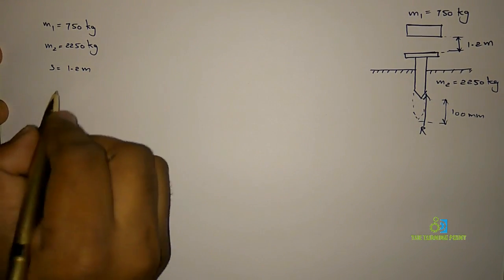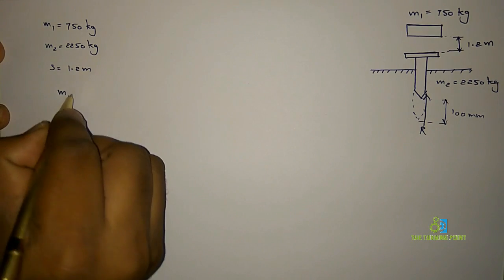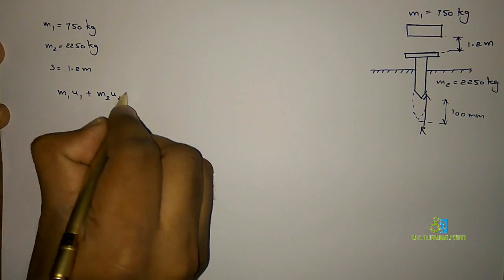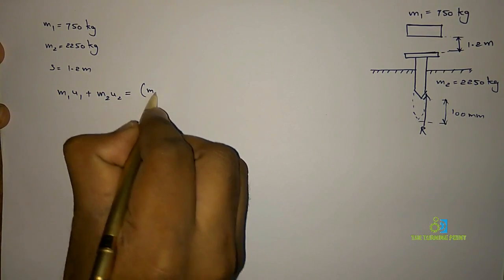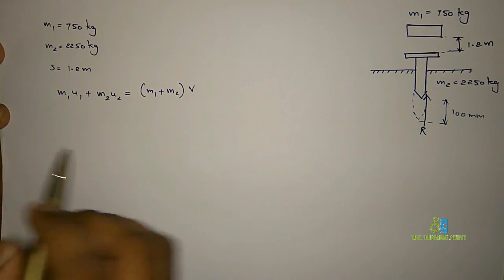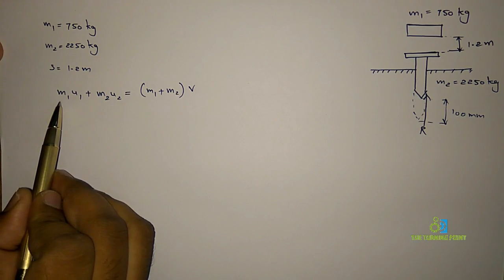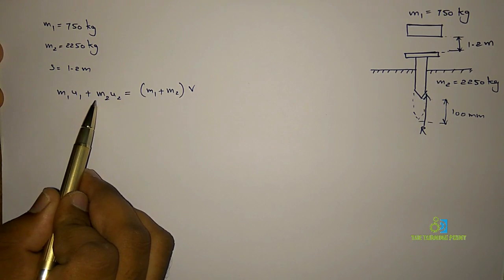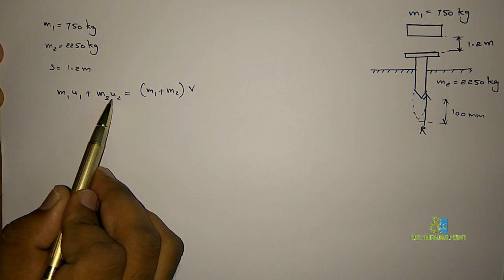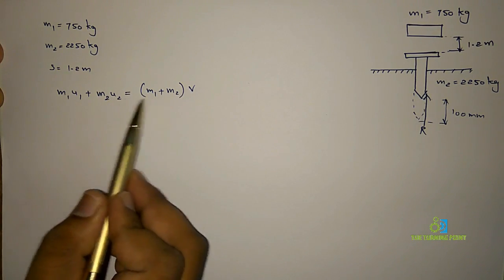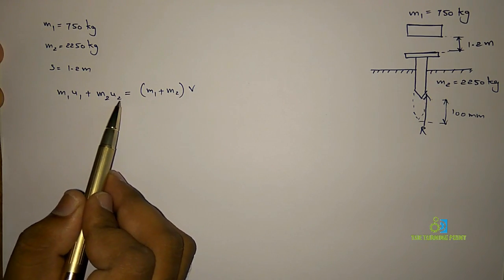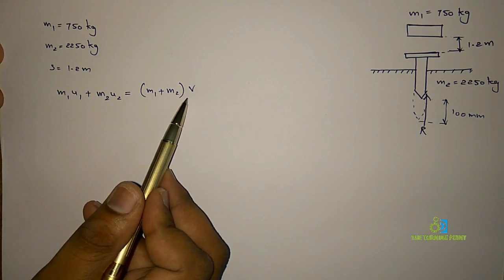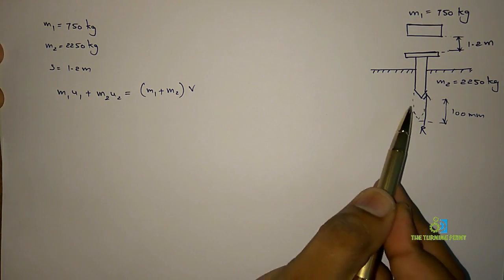The law of conservation of momentum states that initial momentum equals final momentum: M1·U1 + M2·U2 = (M1 + M2)·V. Here M1 is mass of the hammer, U1 is initial velocity of the hammer, M2 is mass of the pile, and U2 is initial velocity of the pile before impact. V is the velocity with which the pile is penetrated into the ground.